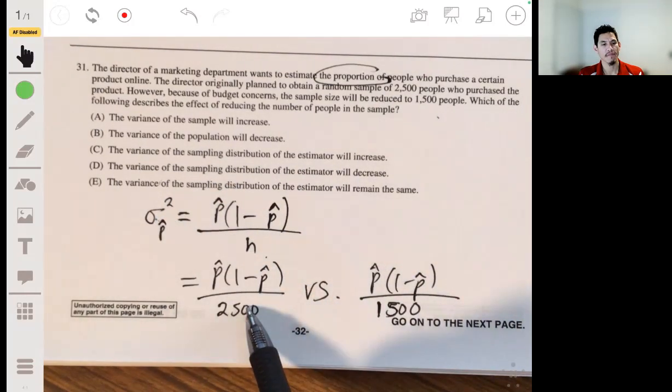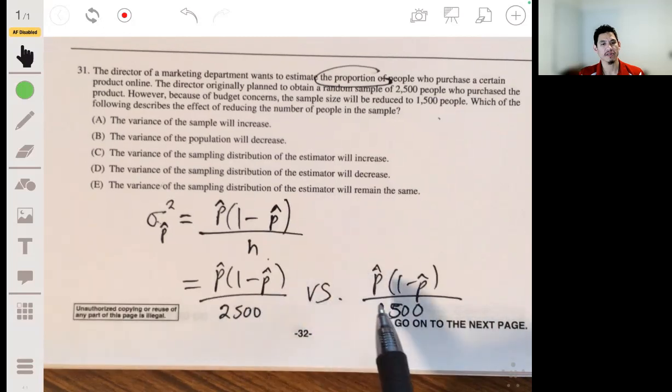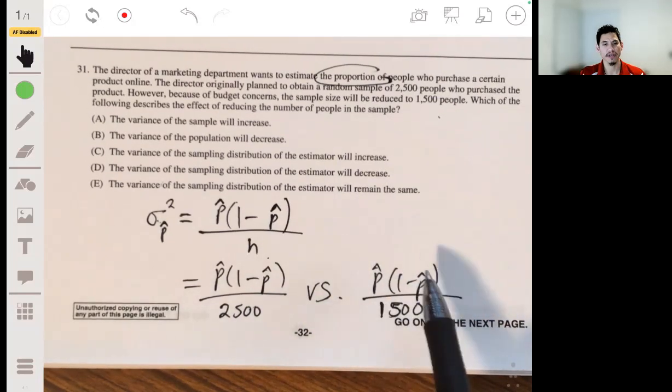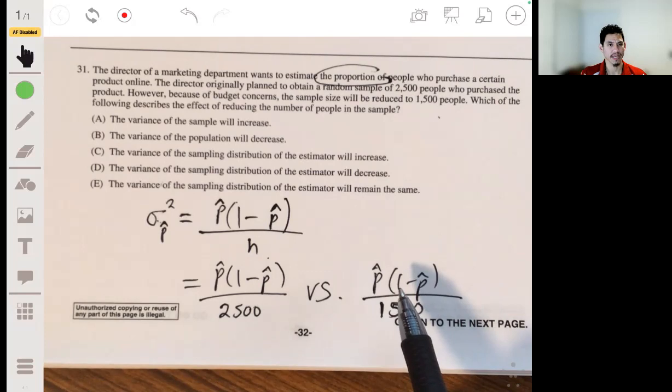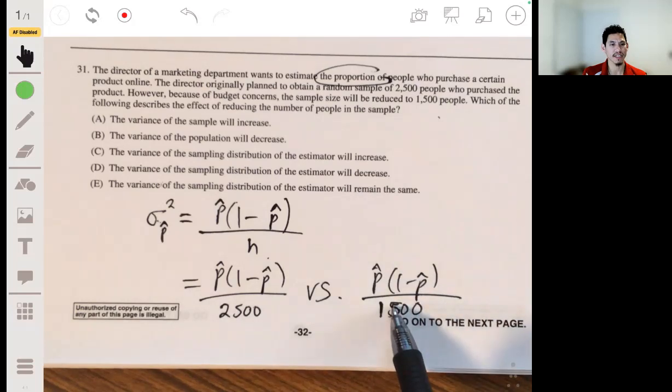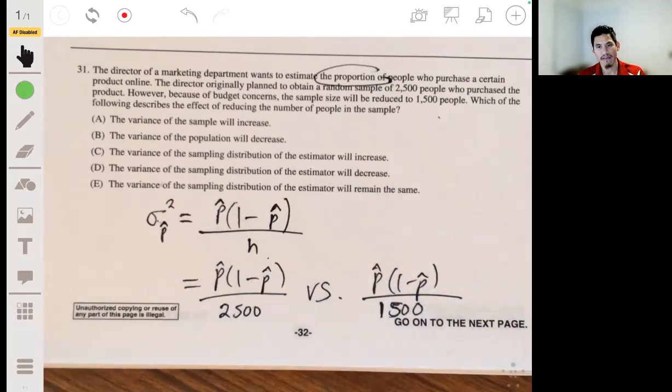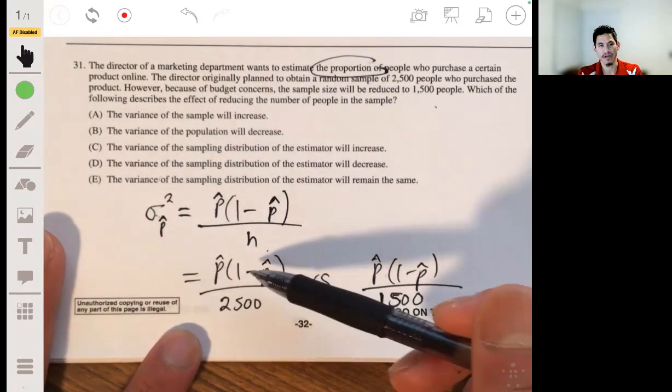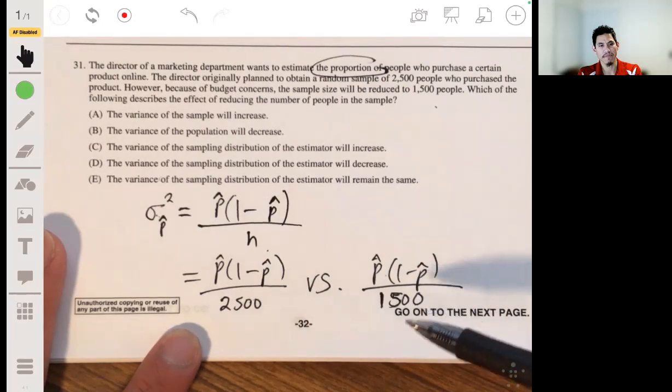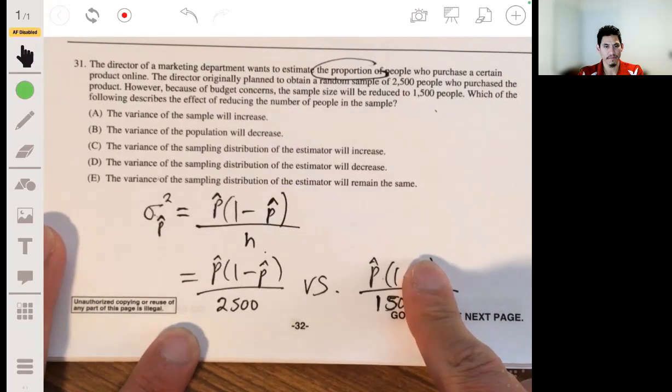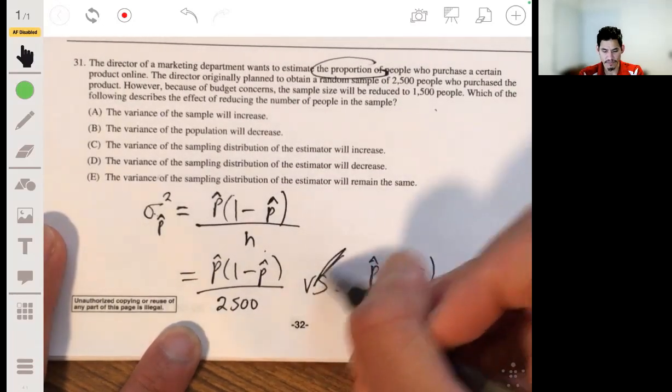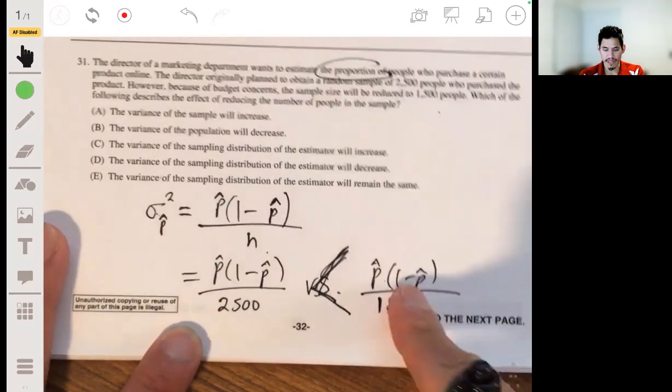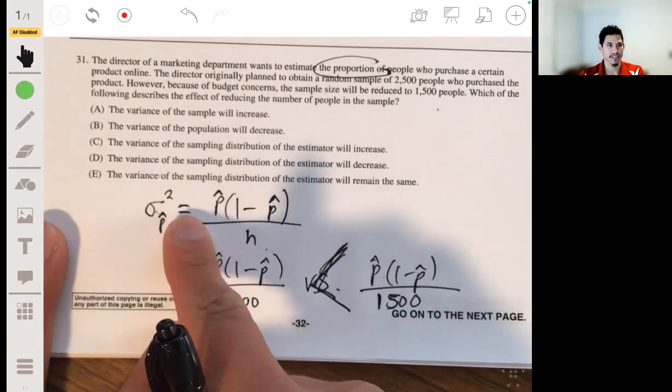So what happens to this value? What happens when you divide from 2,500 to 1,500? Is this value going to be bigger or is it going to be smaller? That's what you want to essentially recognize. And since you're dividing by a lesser amount, you're going to have a bigger number. That's just simple math. You can just test this with anything. 1 over 2,500 versus 1 over 1,500. This will be a bigger value. So since this is greater than that, that means the variance increases.